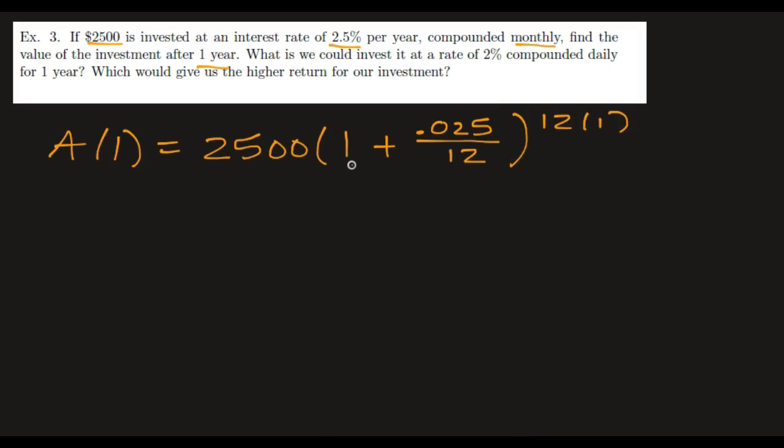So go ahead and put that in your calculator. Remember your order of operations, that the stuff inside the parentheses goes first. And I have to divide the rate by 12, then add 1, then take it to the power 12, and then multiply by 2,500. And I get $2,563.22.